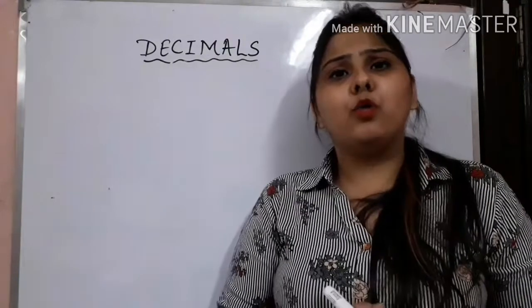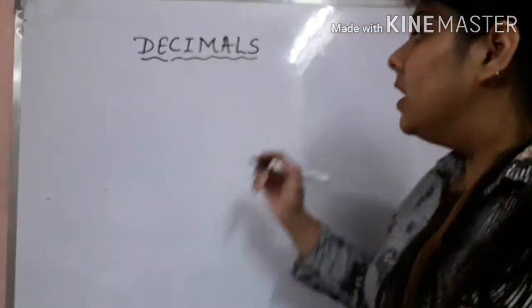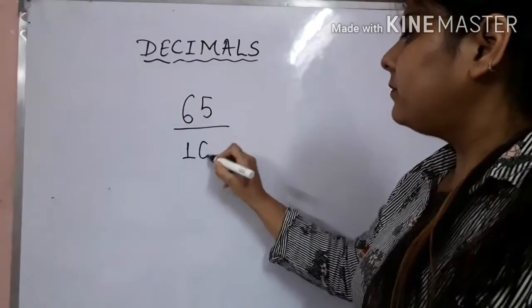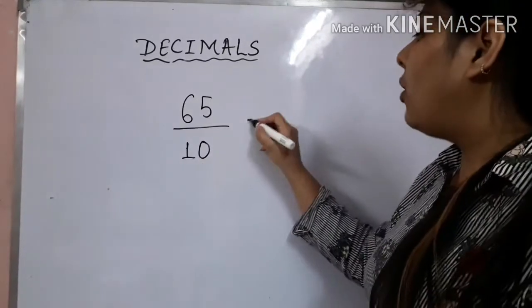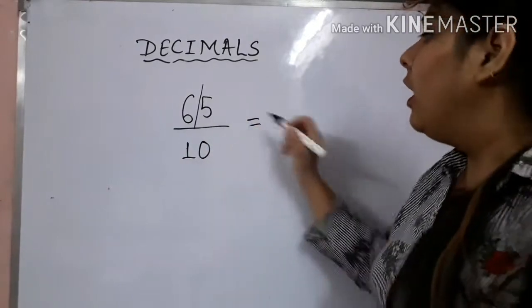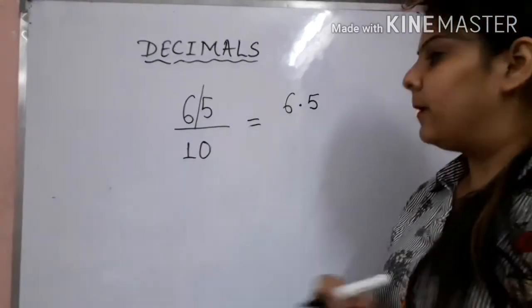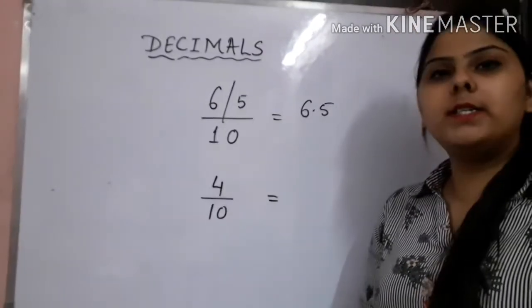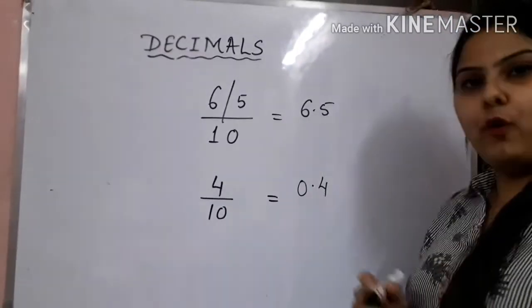Let us learn how to represent a given fraction as a decimal. Suppose I am given 65 upon 10. As you see, 10 consists of only one zero, so I will count the 1s place and put a slash in between, which tells me that my decimal number would be 6.5. Now if I am given a fraction 4 upon 10, the decimal fraction representing it would be 0.4.